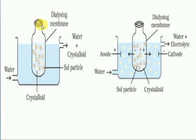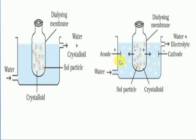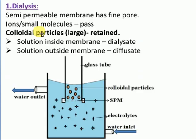This membrane is an animal membrane, also called a parchment membrane or bladder. Inside, there are colloidal particles and crystalline impurities. When placed in water, due to diffusion — particles moving from high to low concentration — the crystalline impurities come out through the cell wall (semipermeable membrane) while the colloids remain in the solution. Normal dialysis is a very slow process and takes a long time.